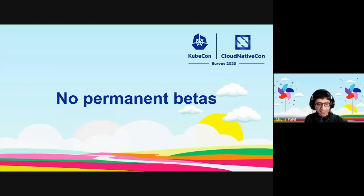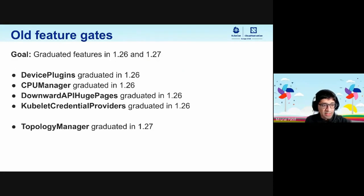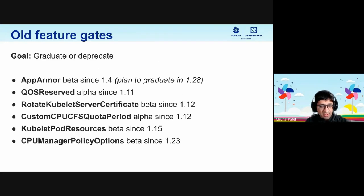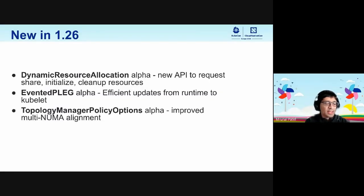There has been a focus on not keeping betas forever since 1.20. We've done a bunch of work to either deprecate or graduate lingering betas. In 1.26 and 1.27, we graduated device plugins, CPU manager, downward API for huge pages, Kubelet credential providers, and topology manager — which was graduated in 1.27. We still have a bunch of work to do because some features are still stuck in beta, and as a SIG we are trying to either graduate them or deprecate them as we go into 1.28 planning.